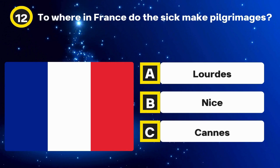Question 13. In which city was the famous black hole? Options: Milky Way, Andromeda Galaxy, Calcutta. The answer: Calcutta.